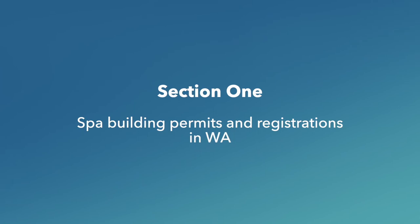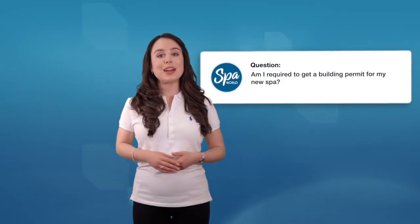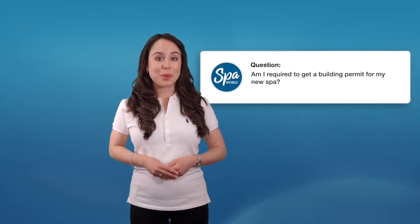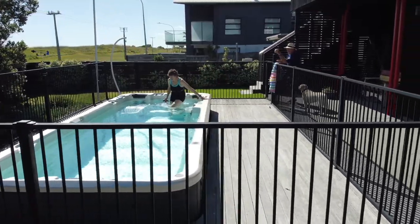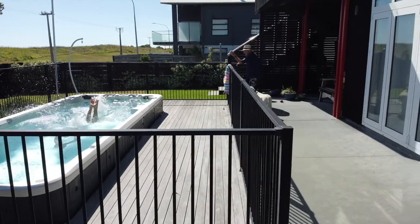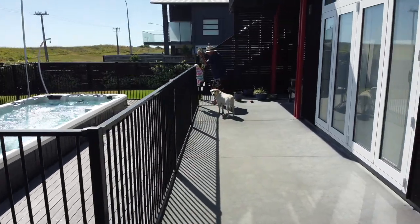Section one, spa building permits and registrations in WA. Am I required to get a building permit for my new spa? Yes, in most cases you will need a building permit to construct, erect or install a spa pool and its safety barrier. Please contact your local council to discuss whether an exemption under legislation applies to you.